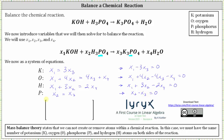Now we write the system of equations as an augmented matrix. Because we have four equations with four unknowns, we will have a four by five augmented matrix, where each equation gives one row. Column one will be the coefficients of x sub one, the second column will be the coefficients of x sub two, and so on. The fifth column will be the constants, which are all zero. The first equation gives us the row: one, zero, negative three, zero, zero.